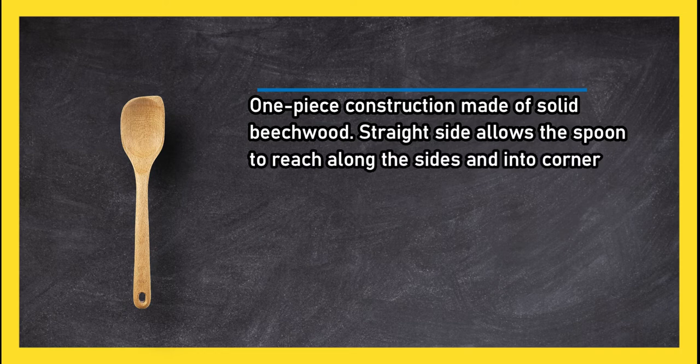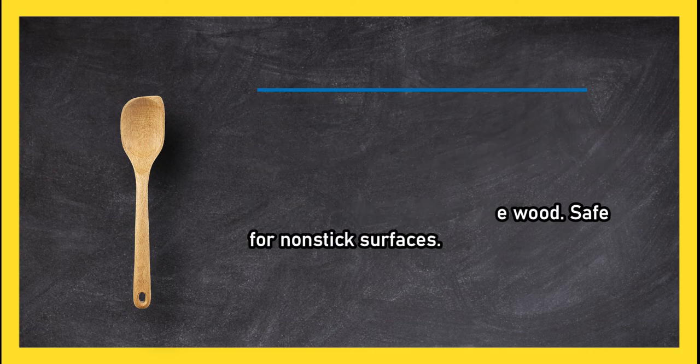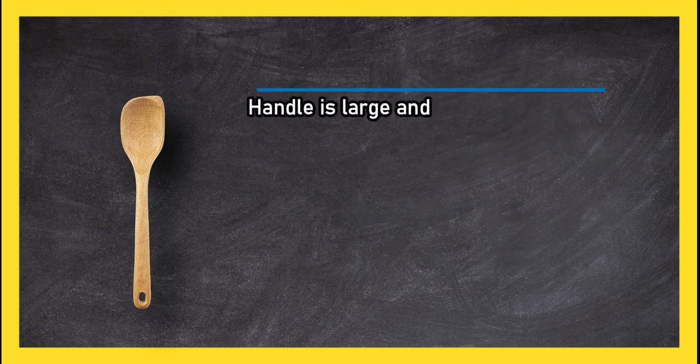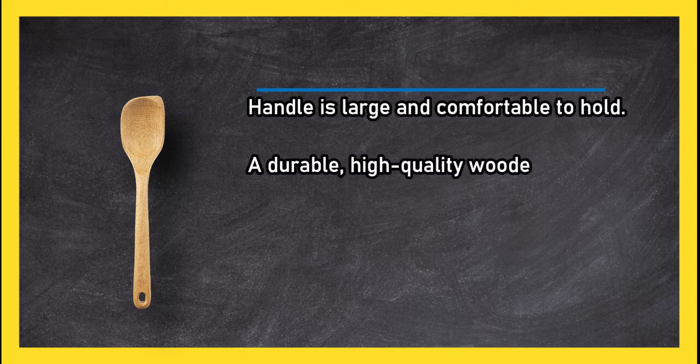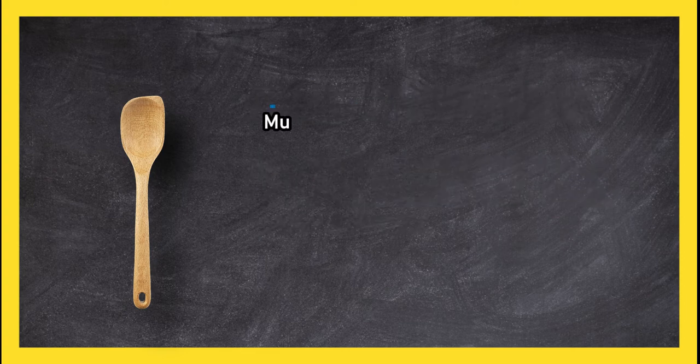Natural oil finish protects the wood, safe for nonstick surfaces. Handle is large and comfortable to hold. A durable, high-quality wooden spoon with a straight side that easily scrapes food from corners. Must be washed by hand. It's a bit bulkier than other wooden spoons.